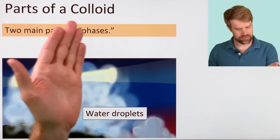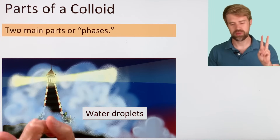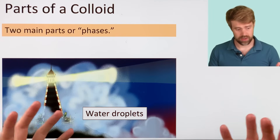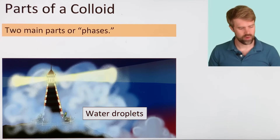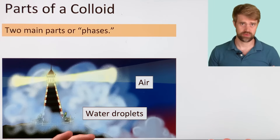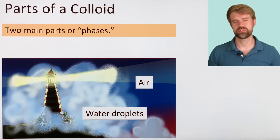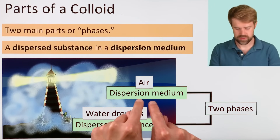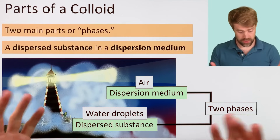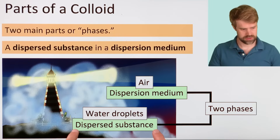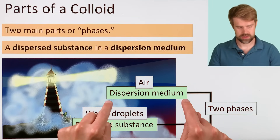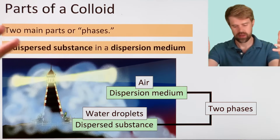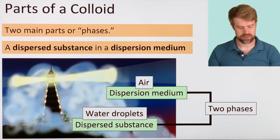Let's talk about the parts of a colloid. Colloids always have two main parts, called phases. In fog, the tiny droplets of water are one phase, and the air is another phase. There are technical terms for these two phases: the dispersed substance and the dispersion medium. In fog, the water droplets are the dispersed substance, and the air is the dispersion medium. The dispersed substance spreads out and kind of floats in the dispersion medium.